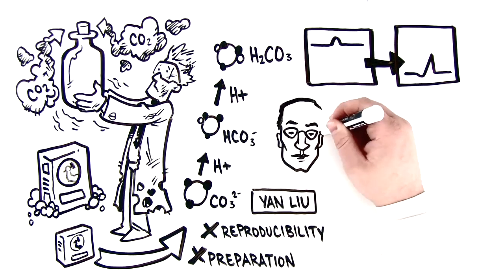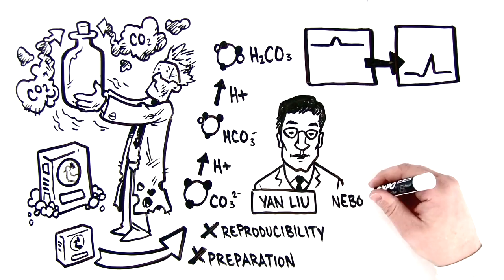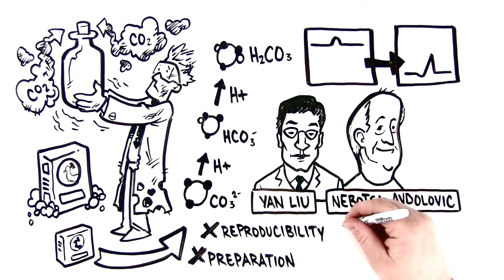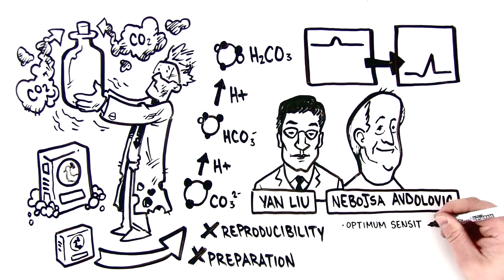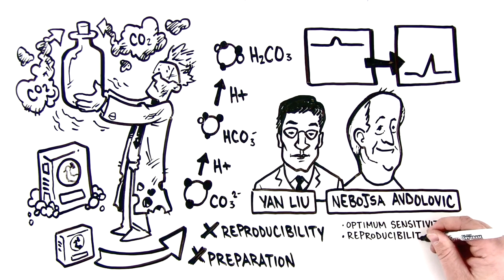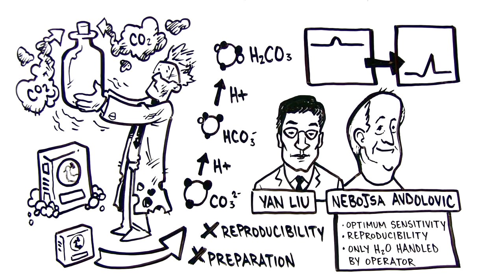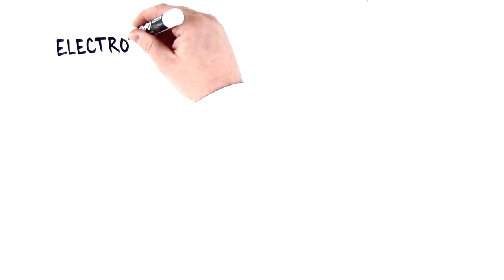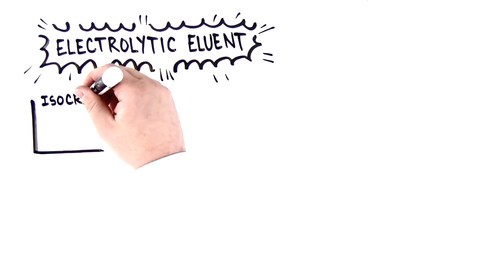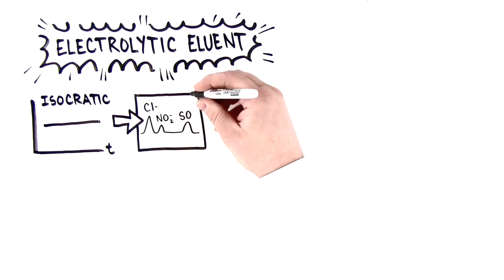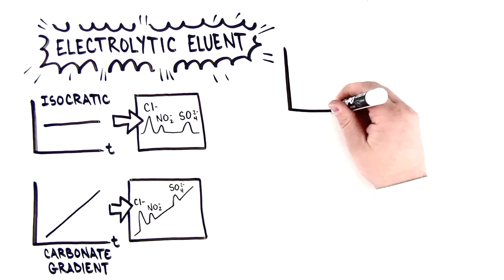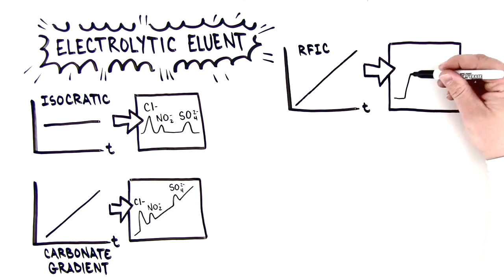Yen Lu and Neboysha Avdolovic of DianX Corporation wondered what ion chromatography would be like if it could combine the optimum sensitivity of hydroxide eluents, reproducibility even better than carbonate eluents, and only water being handled by the operator. They patented the method of electrolytic eluent generation in 1998 gaining not only these benefits but also instantaneous programmable eluent concentration gradients bringing huge benefits to analysis times and performance.